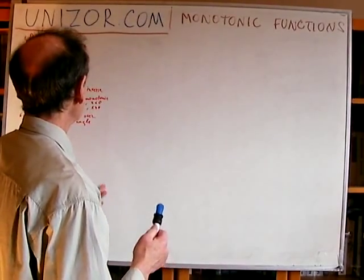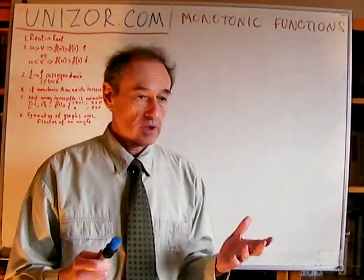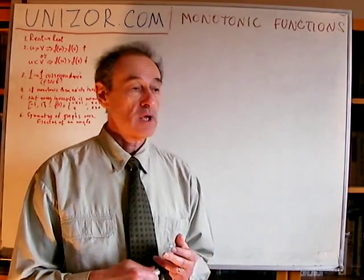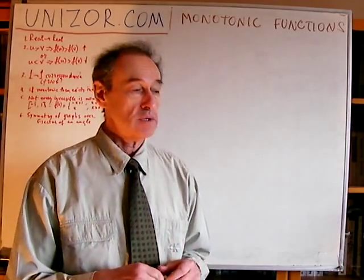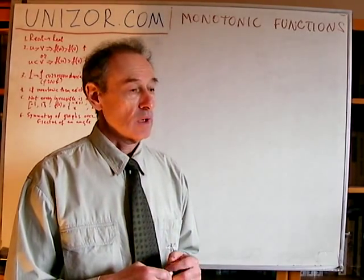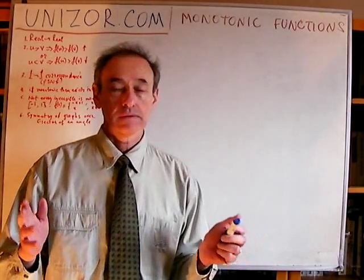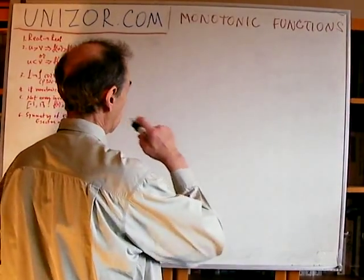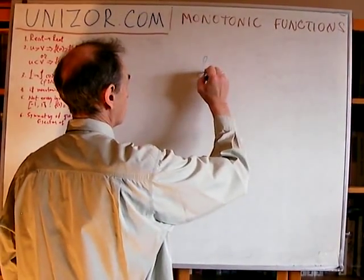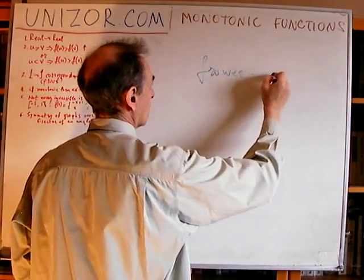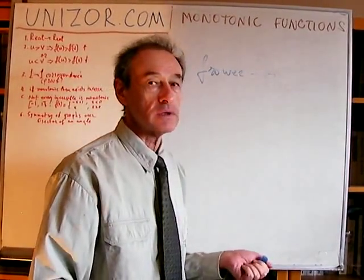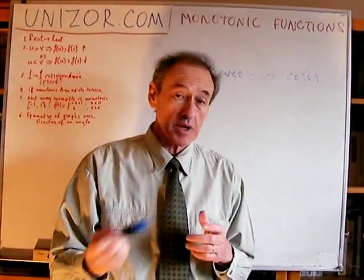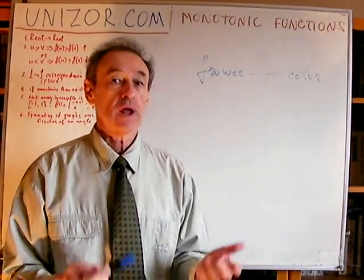First of all, if this is a function, it means there is a domain where the function is defined and there is a range, a codomain. Now let's ask a question: if I have a function which for each flower puts into correspondence the color, can we talk about increasing or decreasing of this particular function? Obviously not.